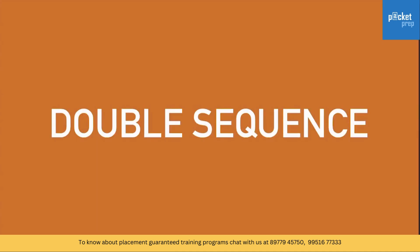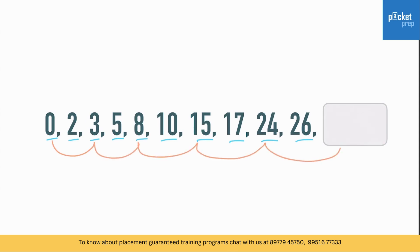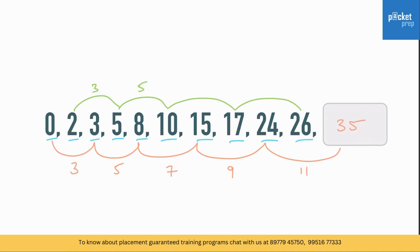Sometimes you'll see a double sequence, like: 0, 2, 3, 5, 8, 10, 15, 17, 24, 26. There's no single direct method, so try alternating numbers. Looking at alternate numbers: 0, 3, 8, 15, 24 — the differences are 3, 5, 7, 9 (odd numbers), so the next difference is 11, giving 24 plus 11 equals 35. The other alternating sequence 2, 5, 10, 17, 26 also confirms differences of 3, 5, 7, 9.